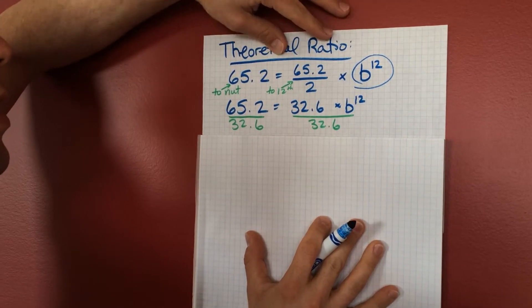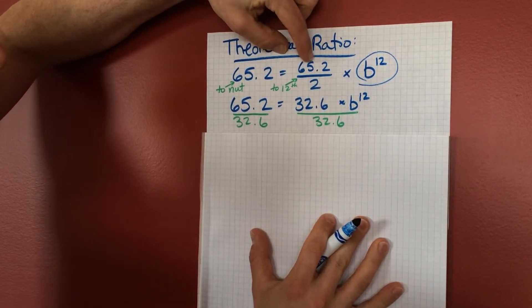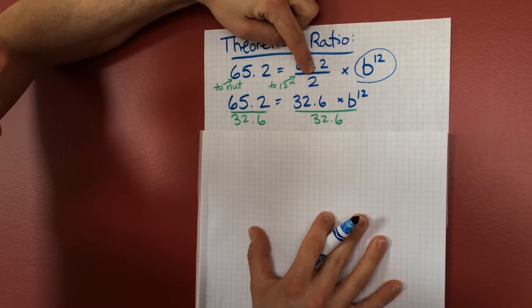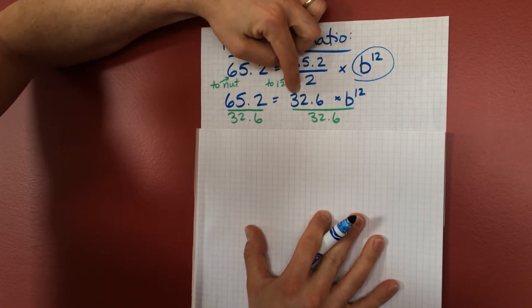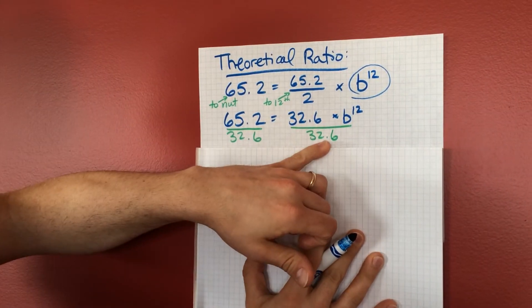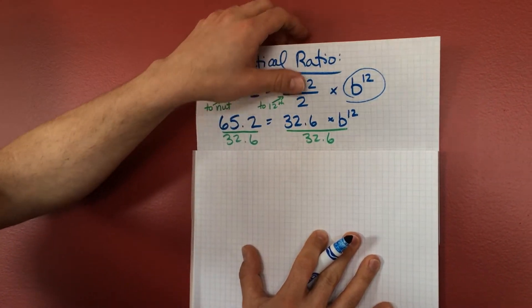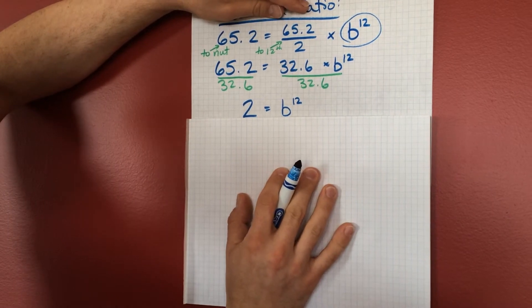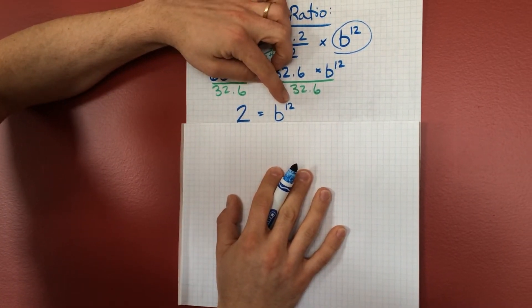So to find out what this is, we have to simplify. I've simplified 65.2 divided by 2. That's the distance to the 12th fret. 32.6 is what I would expect. Divide both sides by 32.6. That's the same as 2 equals b to the 12th.